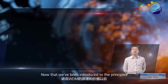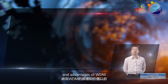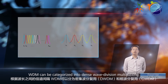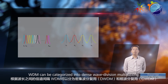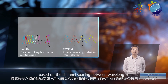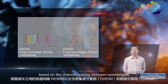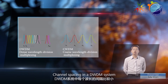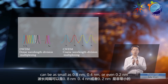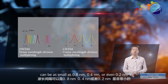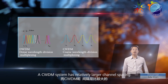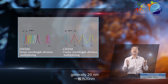Now that we've been introduced to the principles and advantages of WDM, let's further explore a few concepts. WDM can be categorized into dense wave division multiplexing, DWDM, and coarse wave division multiplexing, CWDM, based on the channel spacing between wavelengths. Channel spacing in a DWDM system can be as small as 0.8 nanometers, 0.4 nanometers, or even 0.2 nanometers. A CWDM system has relatively larger channel spacing, generally 20 nanometers.